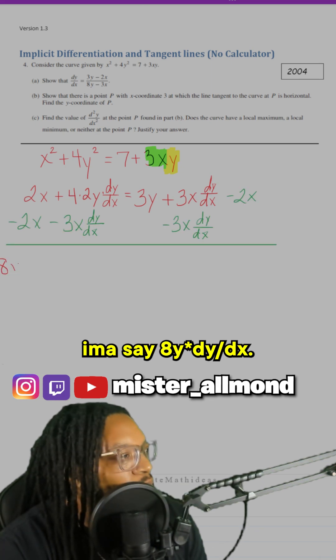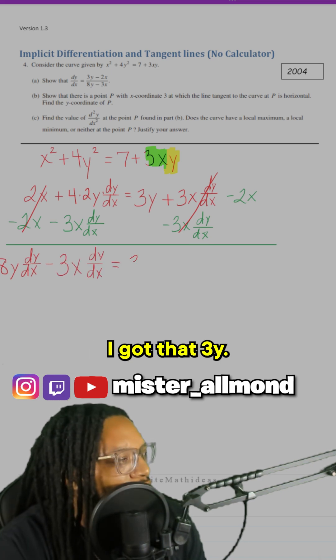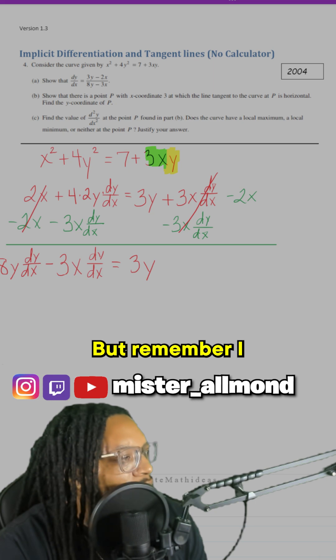So I'm going to have 8y dy/dx minus 3x dy/dx. And then on my right side, I got that 3y, but remember I subtracted 2x.